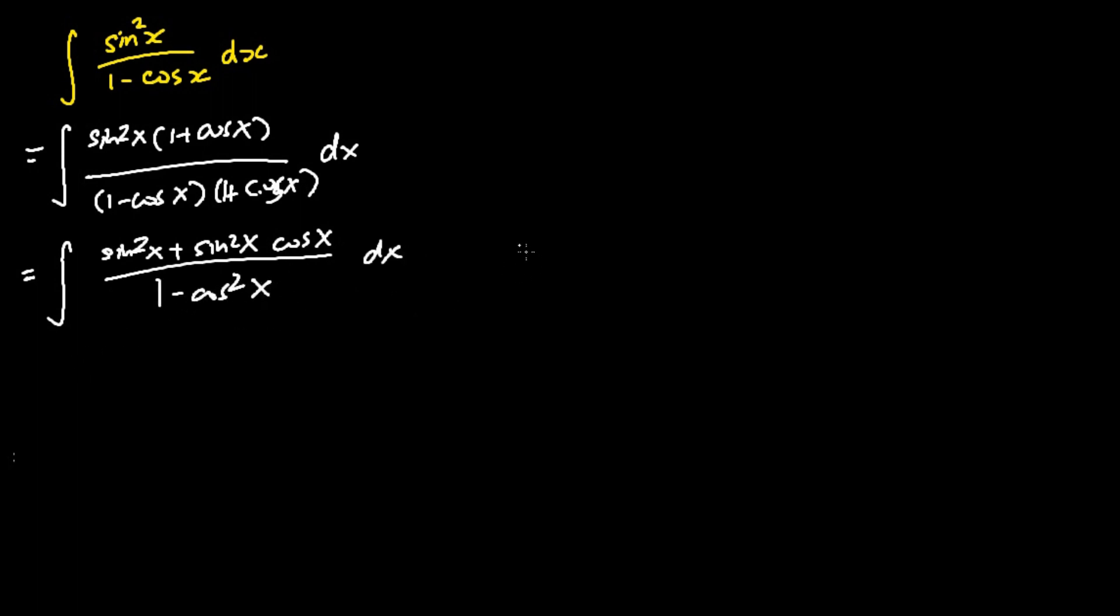This is because we are applying the algebraic rule whereby a minus b times a plus b equals a squared minus b squared. For this particular example, my a equals 1 and my b equals cosine x.